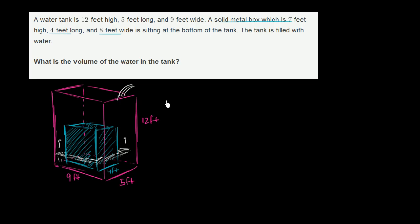The volume of the tank is going to be 9 foot by 5 foot times 12 feet. That's the tank volume. And from that, we want to subtract the metal box volume. So minus 4 foot by 8 feet by 7 feet. This is 4 feet wide. It is 8 feet. It's 7 feet high, 4 feet long, and it's 8 feet wide. So this right over here is the box volume.